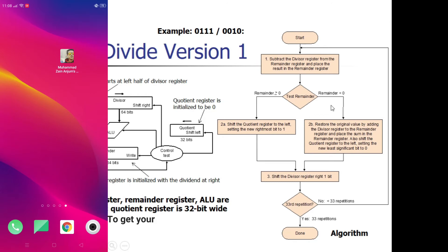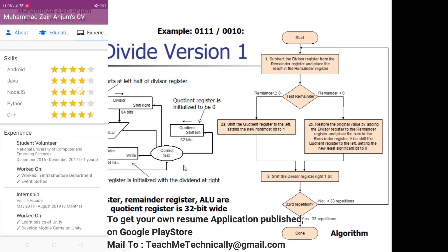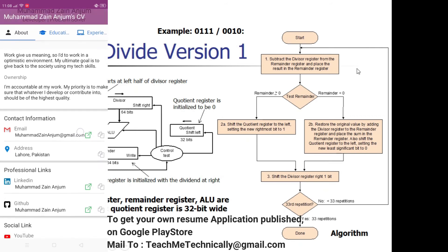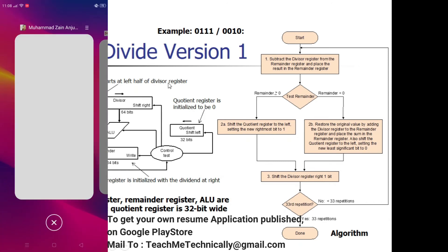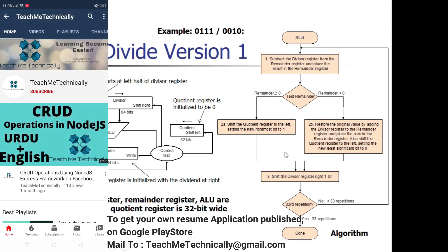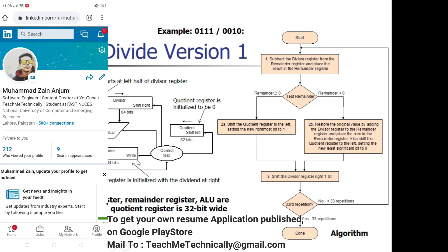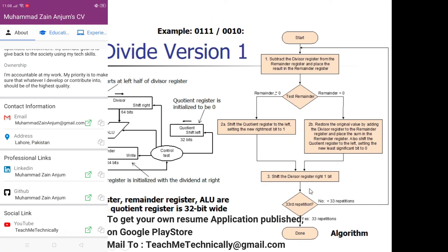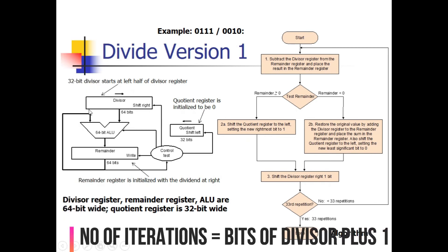If the value of the remainder register is less than 0, we add the value of the divisor back into the remainder — this restores the remainder to its value at the start of the iteration. After adding the divisor back, we shift the quotient register left and set the least significant bit to 0. After either case, we shift the divisor register right by 1 bit. The number of iterations equals the number of bits of the divisor — here 32 iterations.